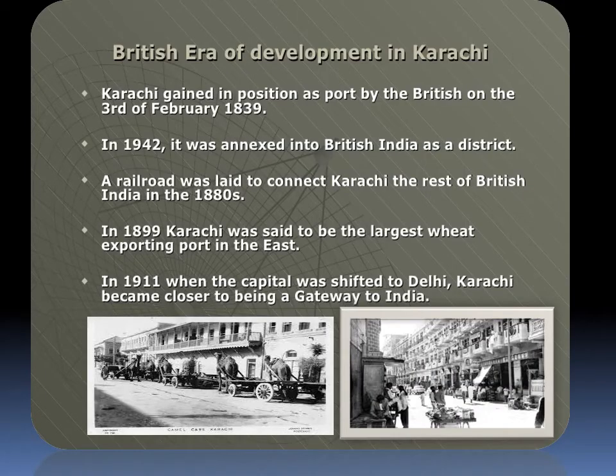Now we will learn about the British era of development in Karachi. Karachi gained its position as a port taken by the British on 3 February 1839. In 1842, it was annexed into British India as a district. A railroad was laid to connect Karachi to the rest of British India in the 1880s. In 1899, Karachi was said to be the largest wheat-exporting port in the East. In 1911, when the capital was shifted to Delhi, Karachi became closer to being a gateway to India.